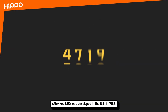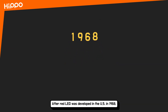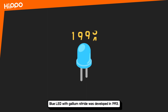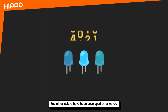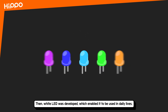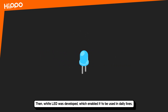After red LED was developed in the U.S. in 1968, blue LED with gallium nitride was developed in 1993, and other colors have been developed afterwards. Then white LED was developed, which enabled it to be used in daily lives.